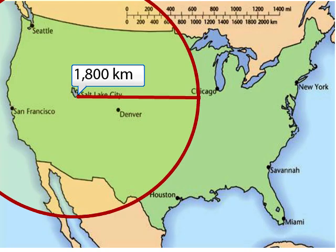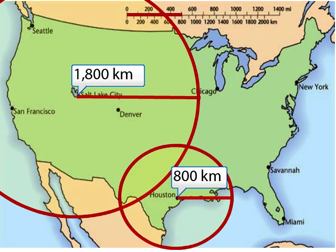I measure out 800 kilometers up here on the scale. I measure that same distance from Houston — there's 800 kilometers. I draw the circle. And as you can see, this circle intersects in two spots. Now we've narrowed down how many places the earthquake could be to one of these two spots.